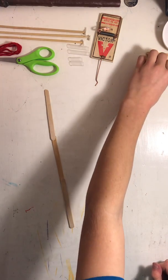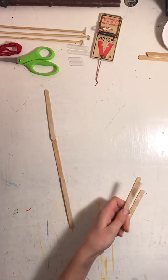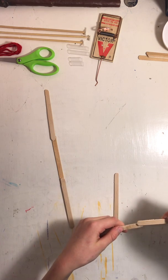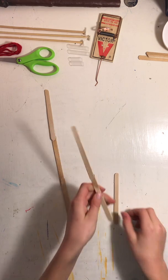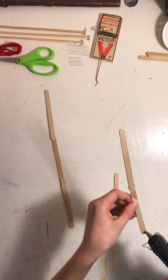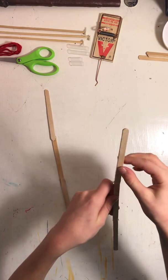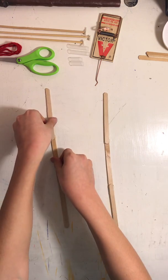The next step is basically to just do the exact same thing all over again. Take your popsicle sticks, put glue on one end, put them together, put some more glue on, and then attach them together like that.